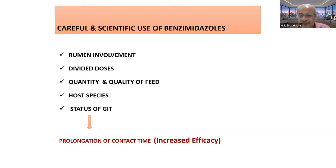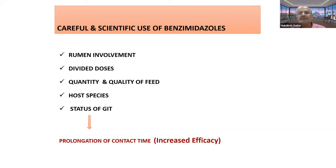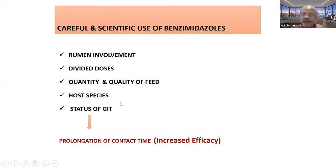Regarding the status of the gastrointestinal tract: if the animal has diarrhea, there is hypermotility, contents move faster, contact time is less, and efficacy is less. In such cases, control the diarrhea first and then give the anthelmintic. In 99% of cases you can wait a day or two. All these managemental manipulations at field level can improve the efficacy of compounds acting on energy metabolism and help delay the development of anthelmintic resistance.